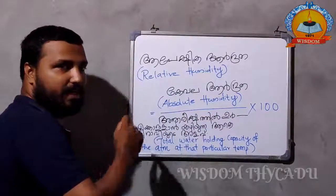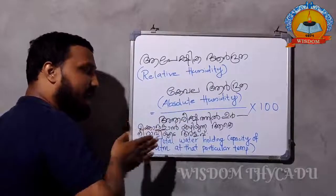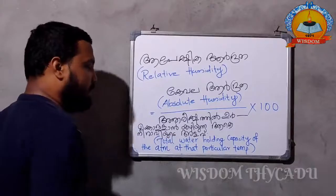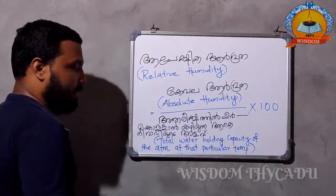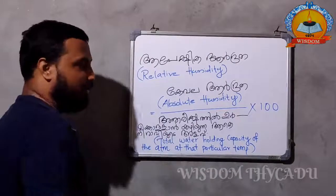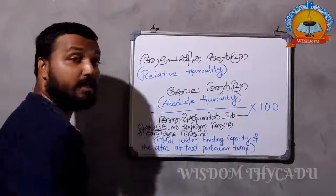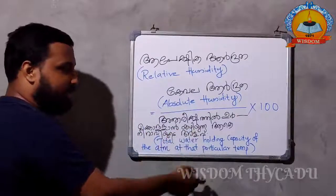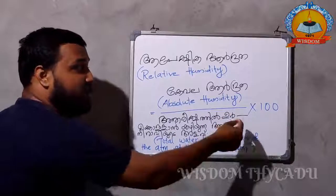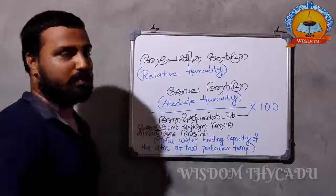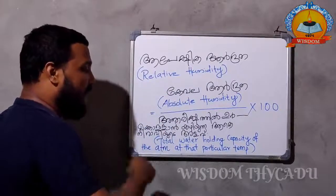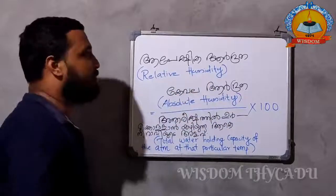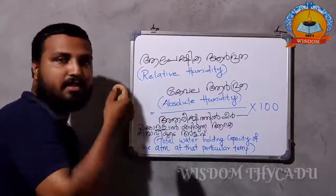Relative Humidity equals Absolute Humidity divided by the total water-holding capacity of the atmosphere at that particular temperature, multiplied by 100. If you are getting a lot of water in the atmosphere, this value is 100.